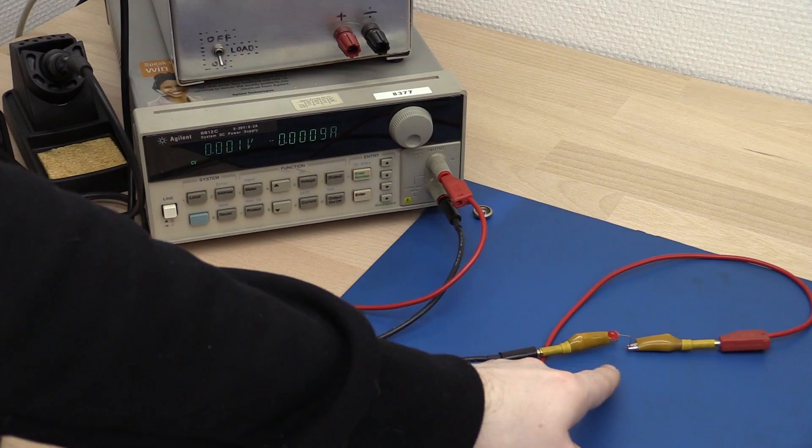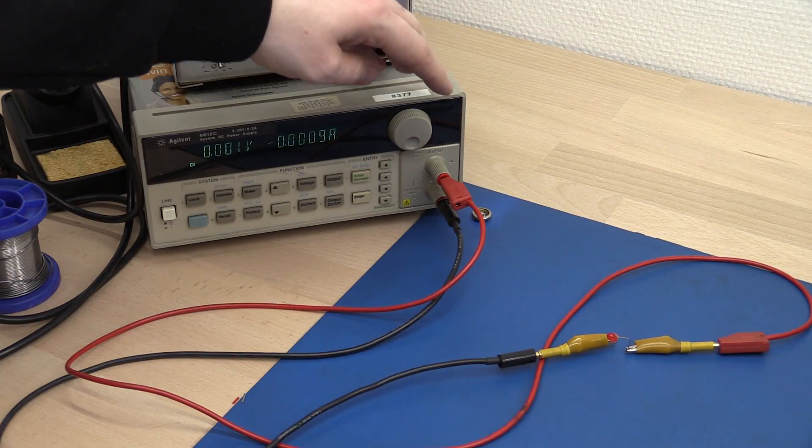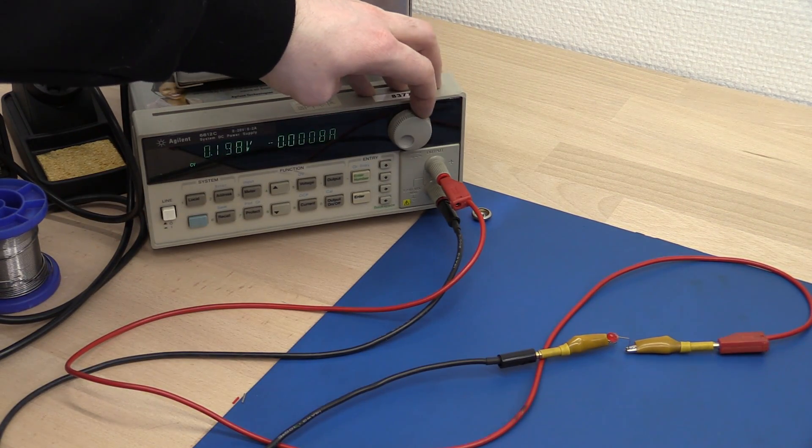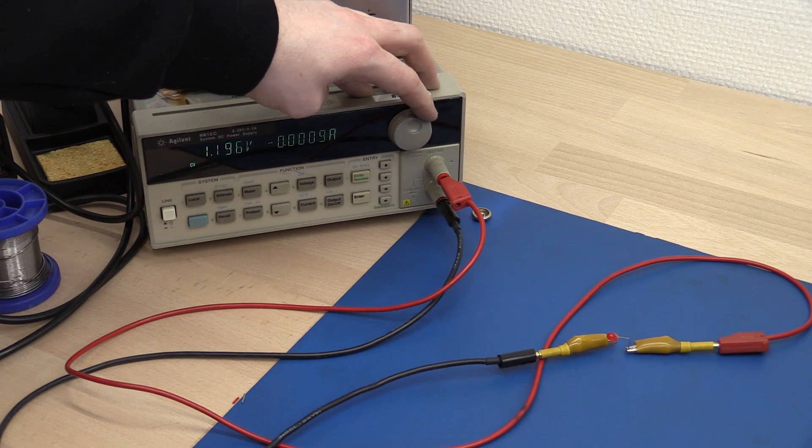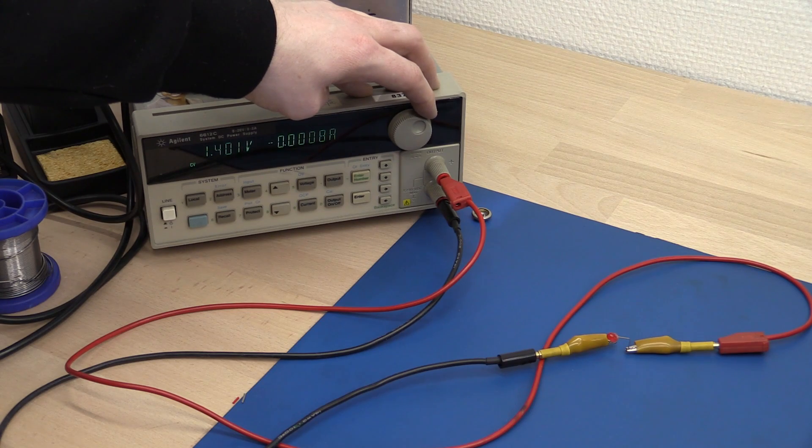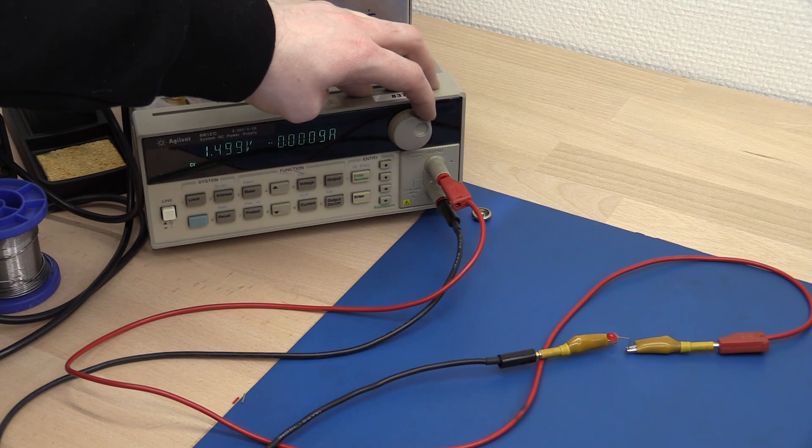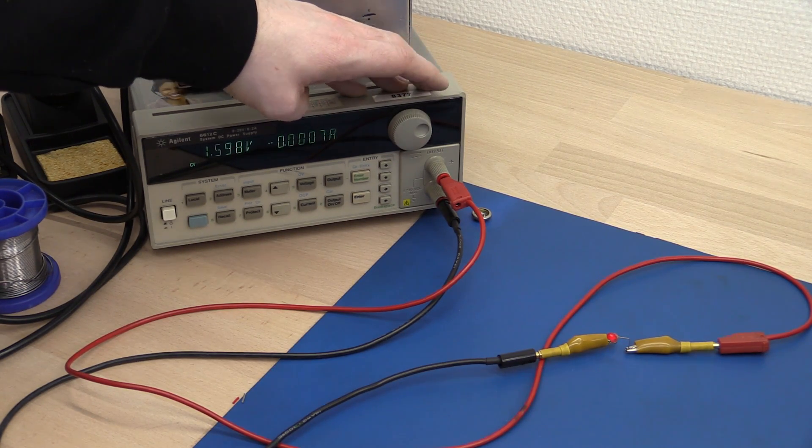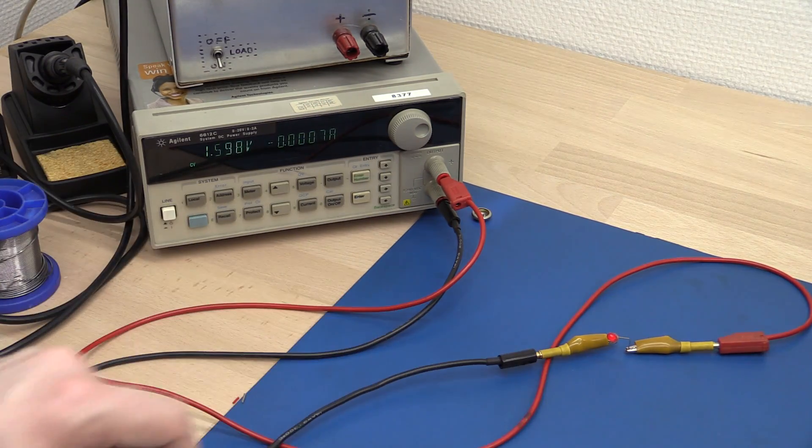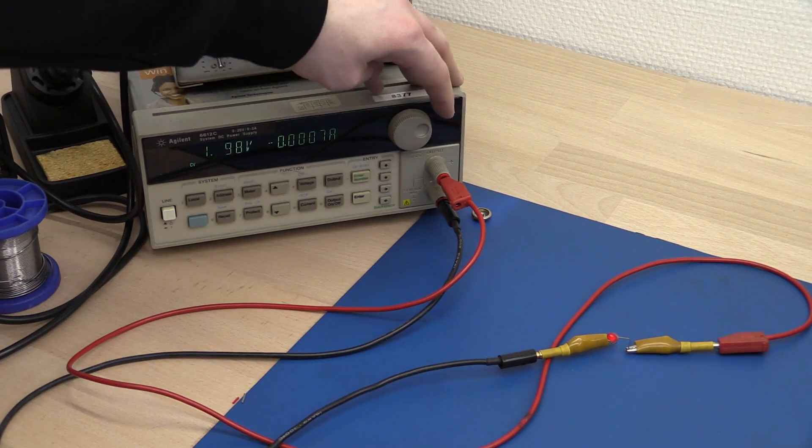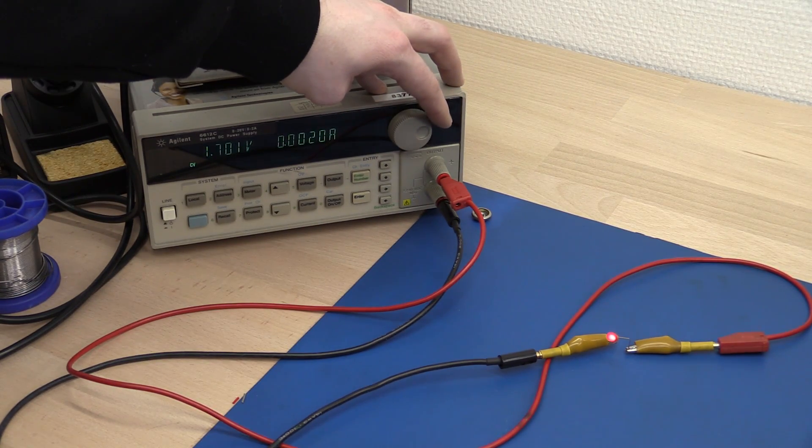So I have set up an LED here, and I will slowly turn up the voltage until something starts to happen. We expect around 1.7 volts it will be lighting up, so actually at 1.6 volts we get a slight glow in the LED. I think that's visible on the camera also. 1.7 volts, we have 2 milliamps.